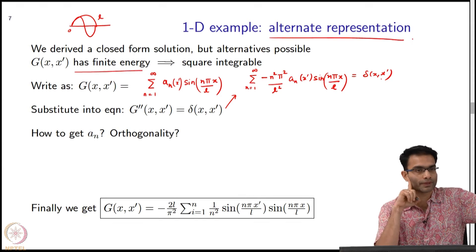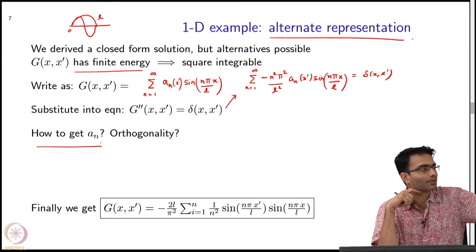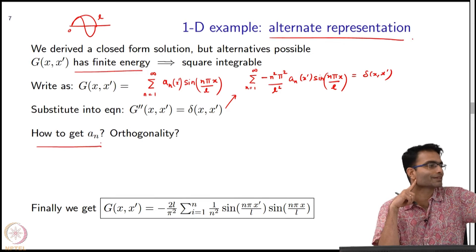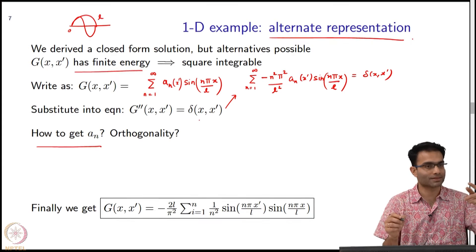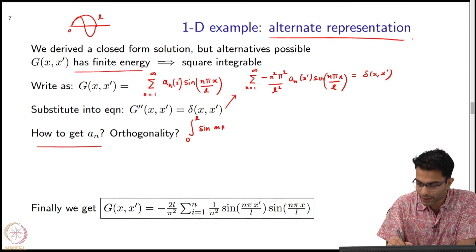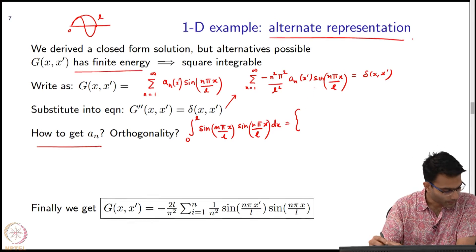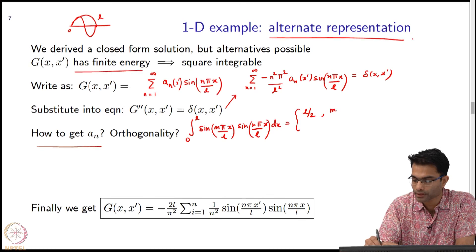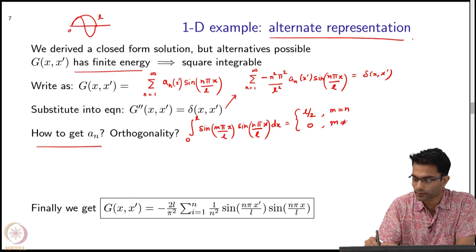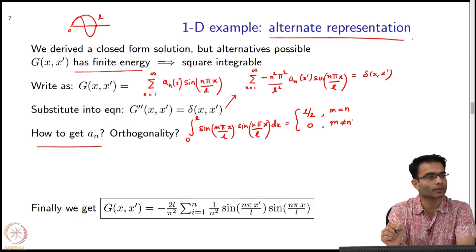All the tricks we learned in Fourier series can be used here. To find out A_n, what should I do? Use orthogonality. The relation I have is that sin(mπx/L) and sin(nπx/L) are orthogonal functions on this interval. This equals L/2 if m equals n, and 0 if m not equal to n. I can multiply both sides by sin(mπx/L) and integrate 0 to L.